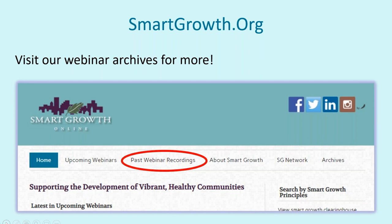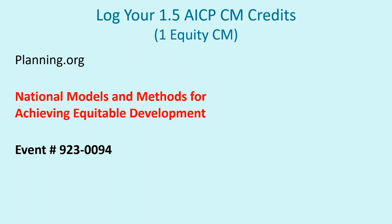Viewers of this live event are eligible to receive one and a half CM credits from the American Planning Association, including one equity CM credit, as well as 1.5 CNUA CEU self-reported credits from the Congress for the New Urbanism. This is the first time we've offered the equity credit, which was new as of January 1st of 2022. To log your AICP credits, visit the American Planning Association's website at planning.org, log into your account, and search for the name of today's event: National Models and Methods for Achieving Equitable Development, or event number 923-0094.